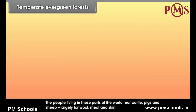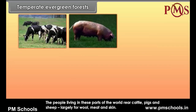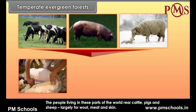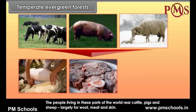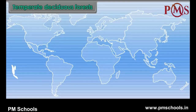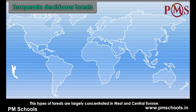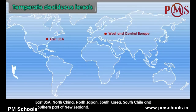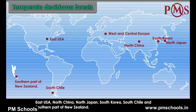The people living in these parts of the world rear cattle, pigs and sheep largely for wool, meat and skin. Temperate Deciduous Forests. This type of forest is largely concentrated in West and Central Europe, East USA, North China, North Japan, South Korea, South Chile and the southern part of New Zealand.